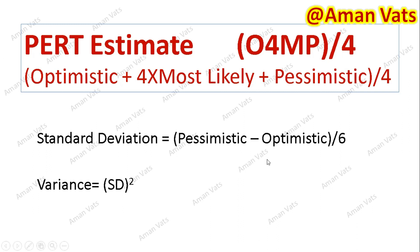Standard deviation is calculated as (Pessimistic − Optimistic) / 6, and variance is simply standard deviation squared. That is the PERT estimation formula along with its statistical measures.